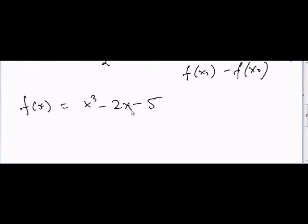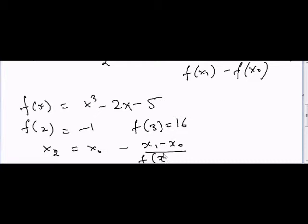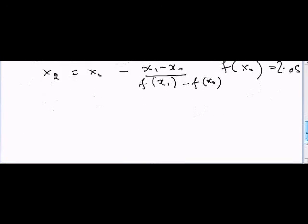So in this case, f of 2 is equal to minus 1 and f of 3 is equal to 16. So we can assume this one as x₀ and 3 as x₁. So we can write this equation and solve for x₂. So x₂ is equal to x₀ minus (x₁ minus x₀) divided by (f of x₁ minus f of x₀) times f of x₀), and that will be equal to 2.0588.